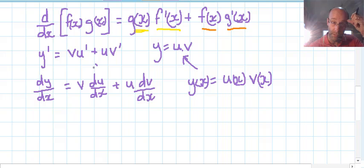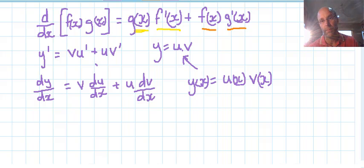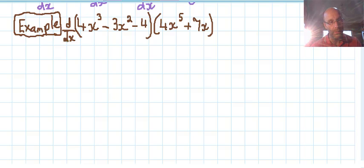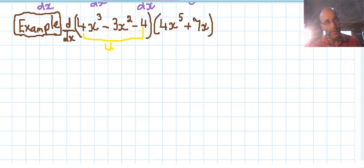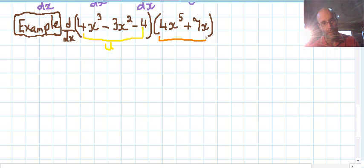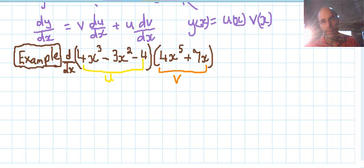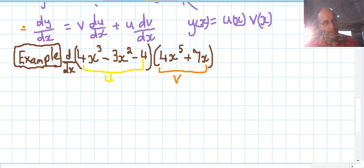So here's an example where you have to find the derivative of 4x cubed minus 3x squared minus 4, multiplied by 4x to the fifth plus 7x. So we have two polynomials there. That one there will be the first one which we could call u, and this one we can call the second one v. I'm just using the third notation. It doesn't matter at this stage at all. So let's find the derivative.